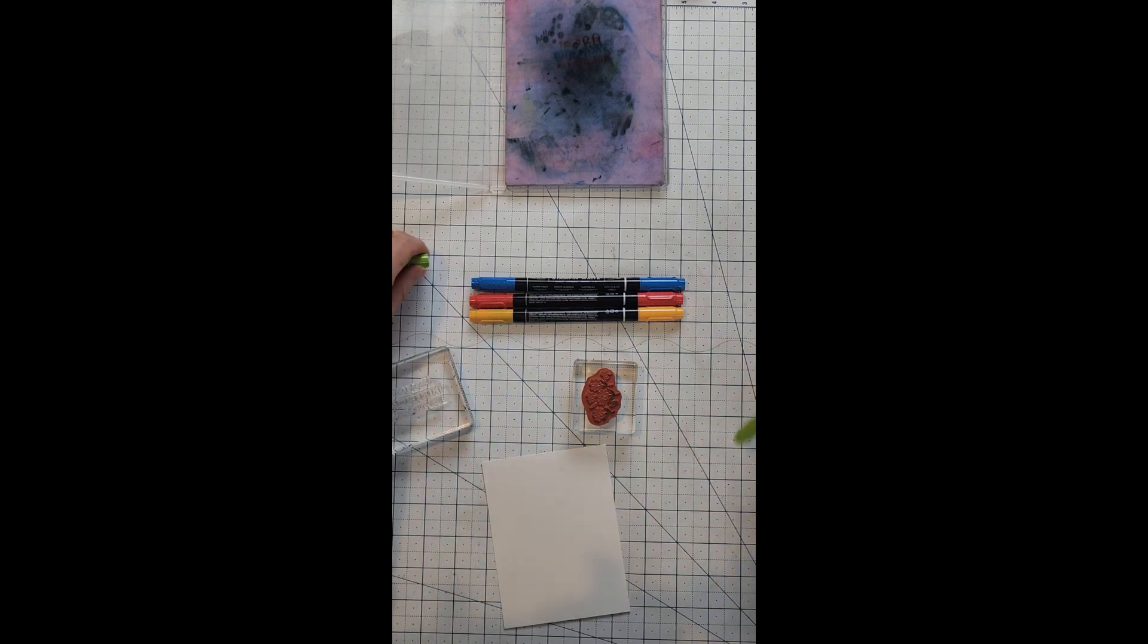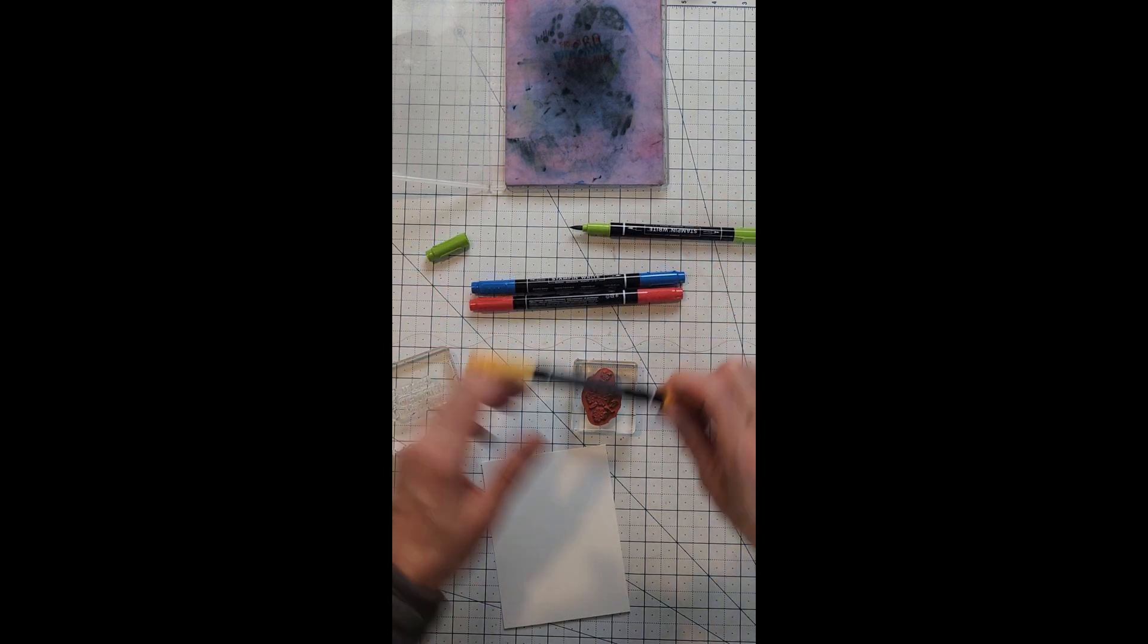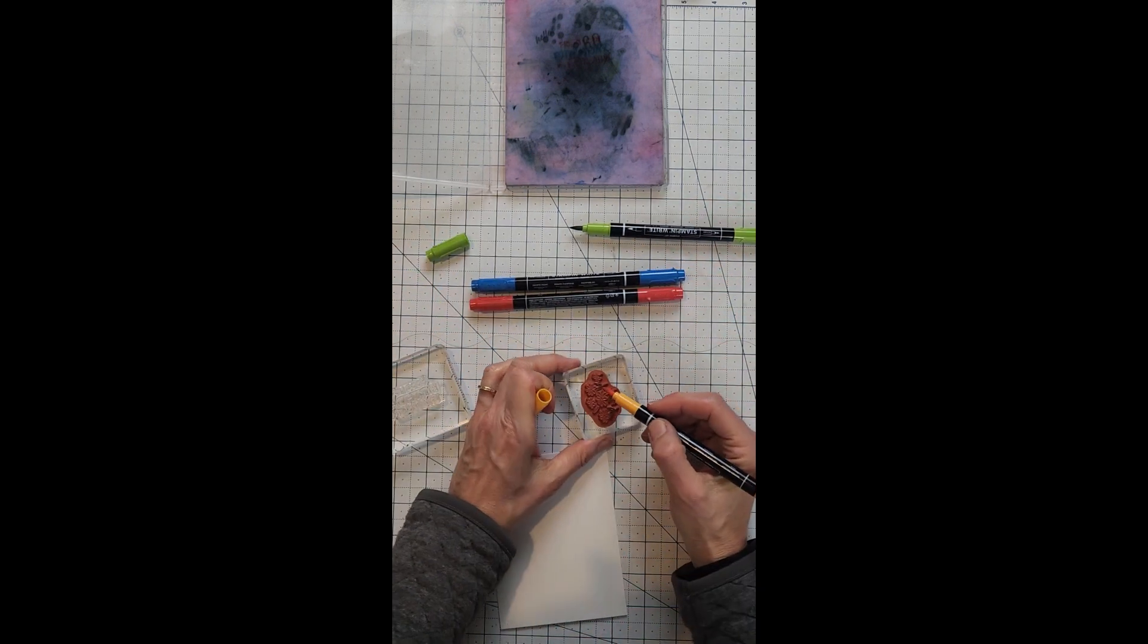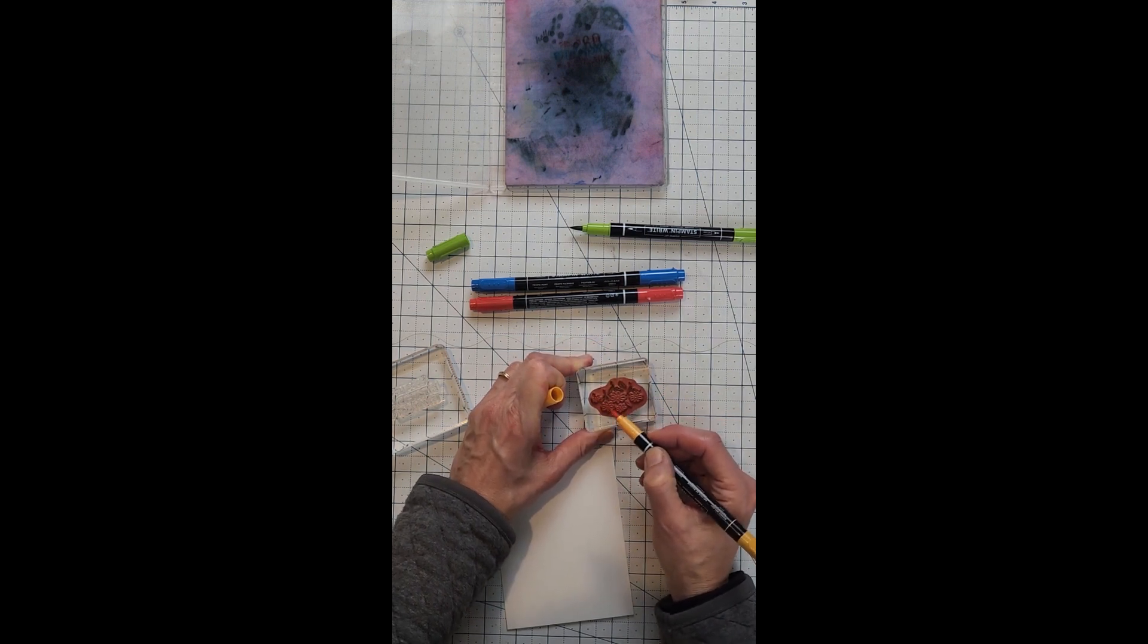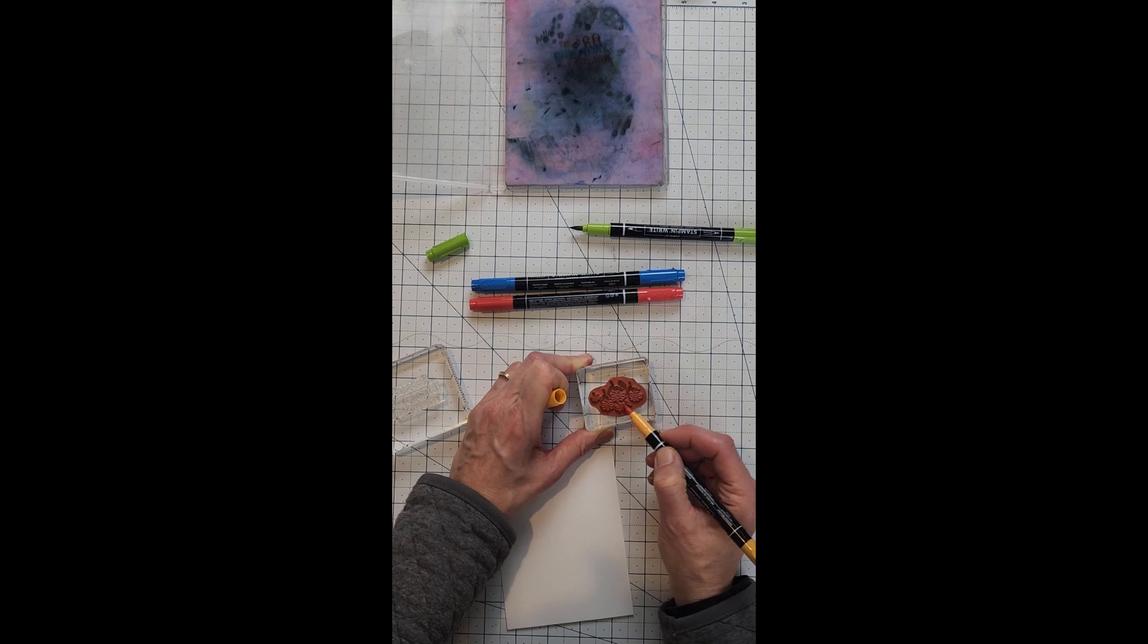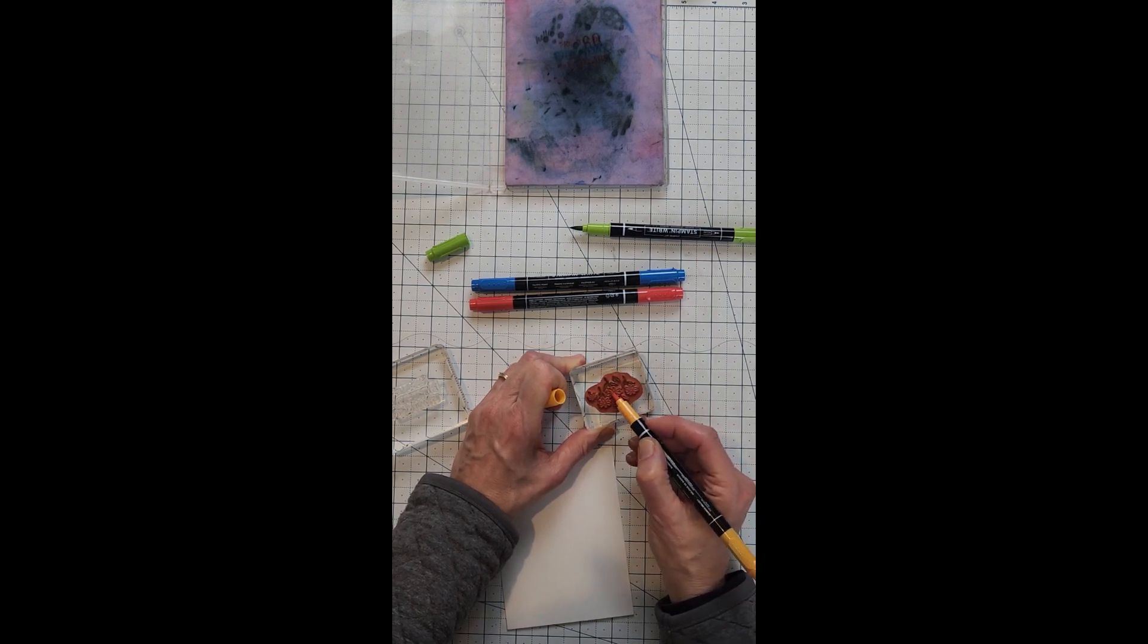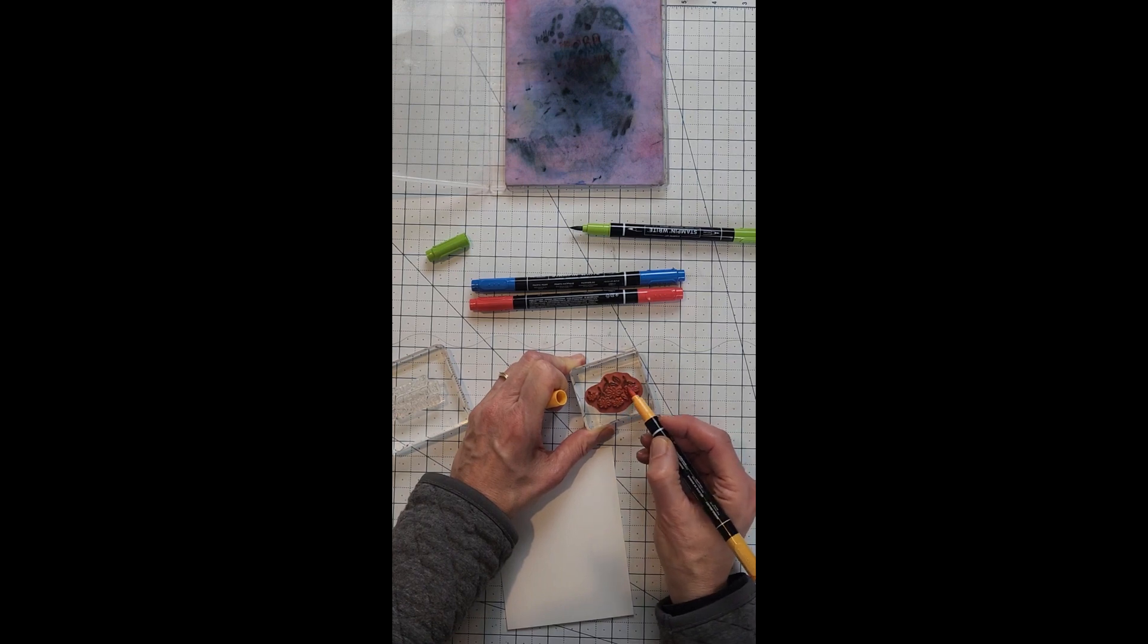And this will give them more of a watercolor effect. Change it to a different color. I'm using Mango Melody here, but keep in mind as long as they're water-based you can use any markers that you like directly to the stamps.